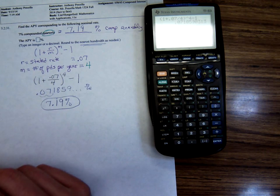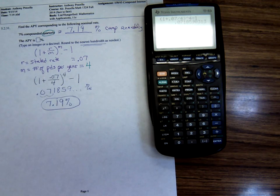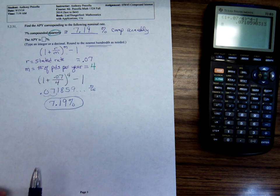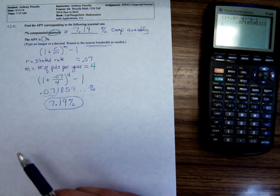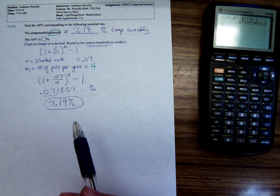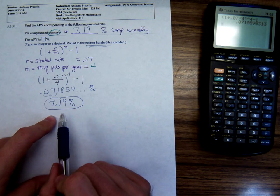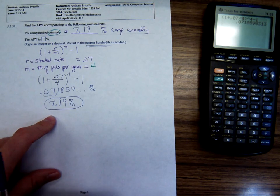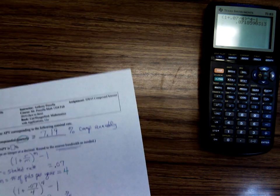It's the law that every savings account or CD must state that APY. Why? That way you can compare. If you're looking at different bank rates, which one's the highest? Look at the APY and whichever one is the highest, that's the one that gives you the most money. Now let's do another one of these, just to make sure you have the hang of it.